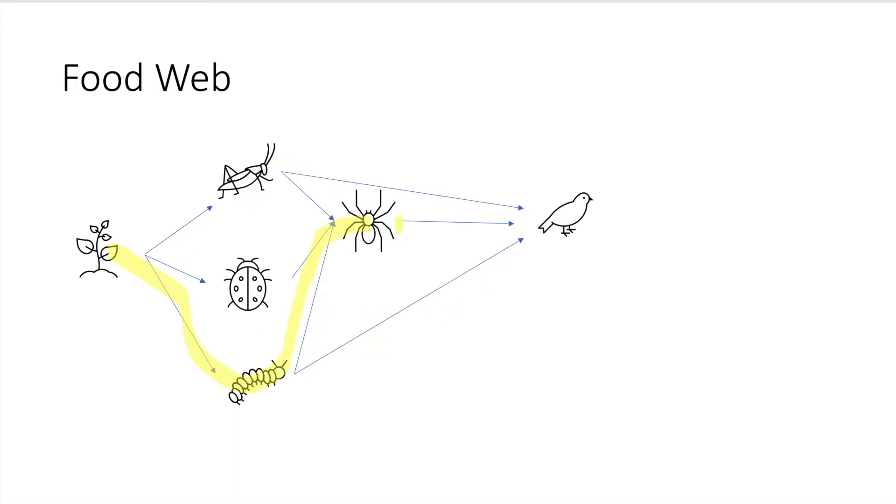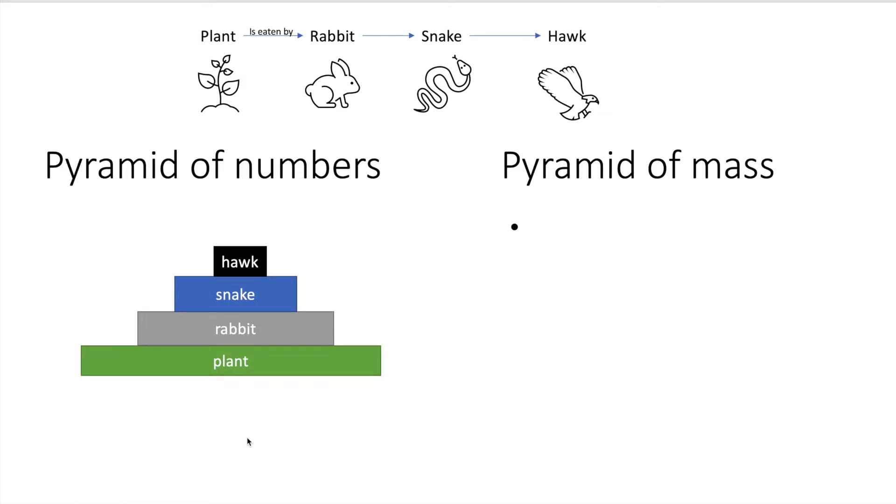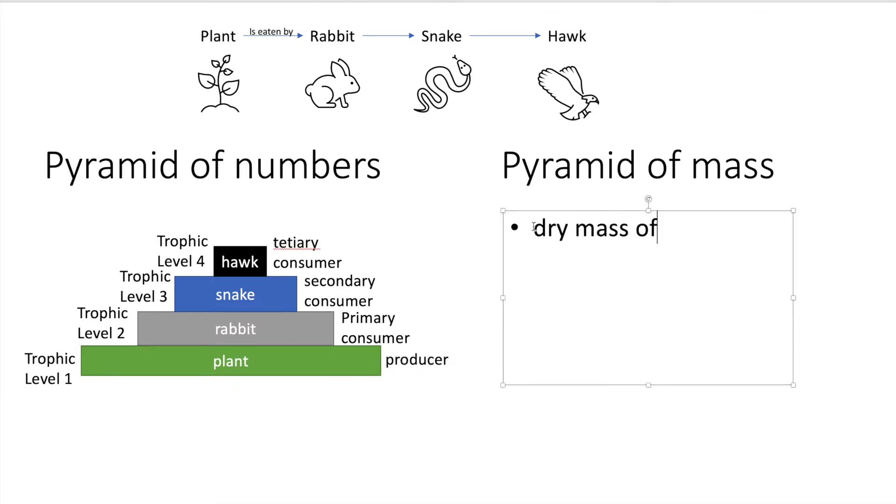Also another diagram of interest will be the pyramid. Pyramid of numbers and pyramid of mass. So using the earlier example of the plant, the herbivore, carnivore, okay, this will look like it. There are many plants and then they are lesser herbivores, much lesser carnivores and finally an even lesser tertiary consumer. Pyramid of mass. The numbers are constructed by the dry mass of the organism within the environment at any one time.